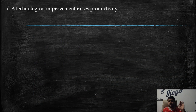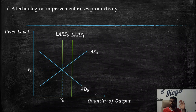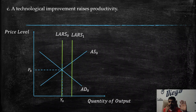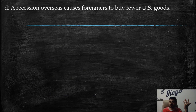Part c: A technological improvement raises productivity. In this situation, we face an increase in long-run aggregate supply, shifting from LRAS0 to LRAS1. Remember, changes in long-run aggregate supply are driven by natural resources, capital stock, or labor. The short-run aggregate supply also shifts to the right, so as a consequence we have lower prices and higher quantities in the economy.